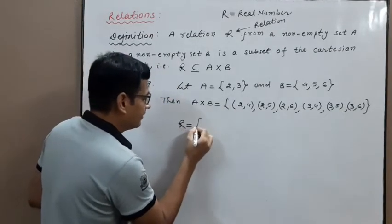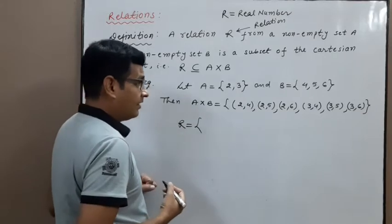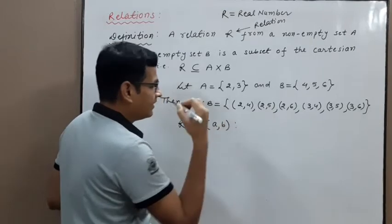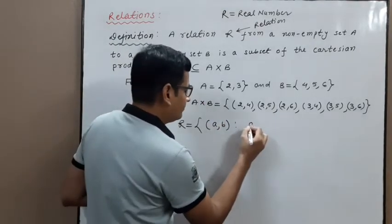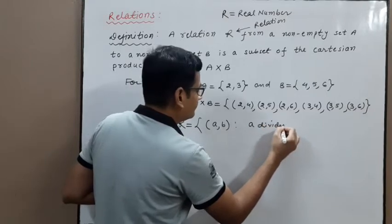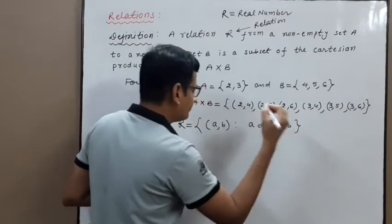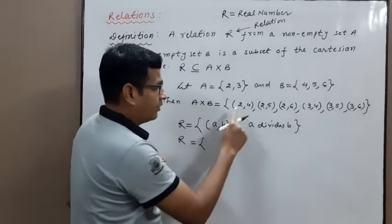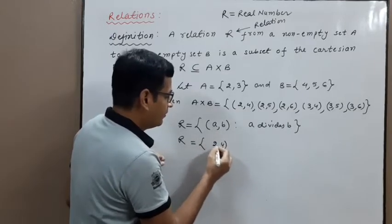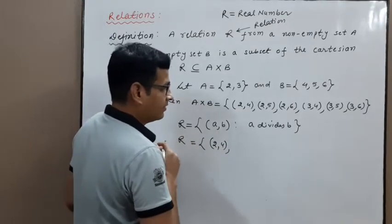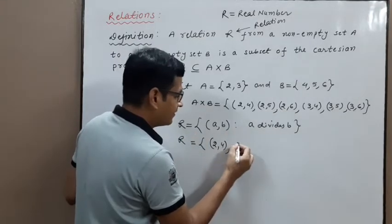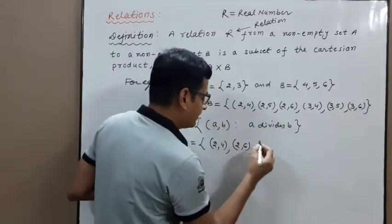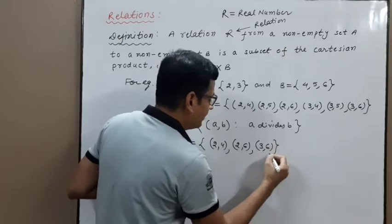Now define the relation. In set-builder form, R is the set of ordered pairs (a, b) such that a divides b. We can also write in roster form: 2 divides 4 so (2,4) belongs to R; 2 divides 6 so (2,6) belongs to R; and 3 divides 6 so (3,6) belongs to R.